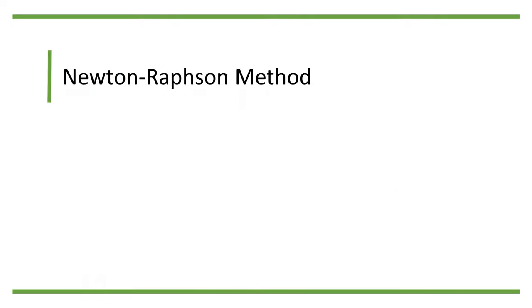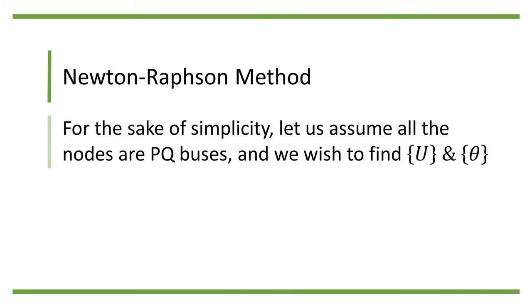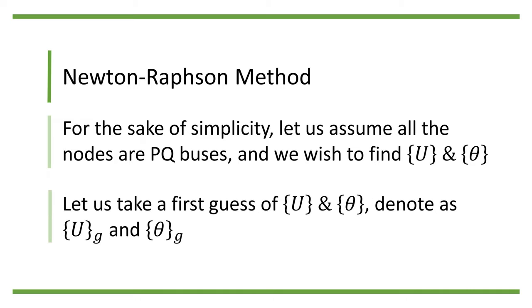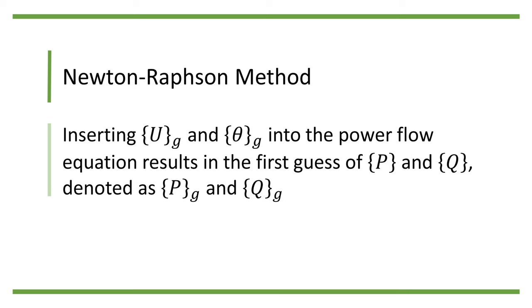To demonstrate how the Newton-Raphson method works, assume for the sake of simplicity all the nodes in the power system are PQ buses, and we solve for the voltage magnitude and phase angle for each node. We do so by starting with an initial guess of U and theta, which we call U_g and theta_g. Next, let us insert U_g and theta_g into the power flow equation. This will result in the first guess of P and Q, denoted as P_g and Q_g.